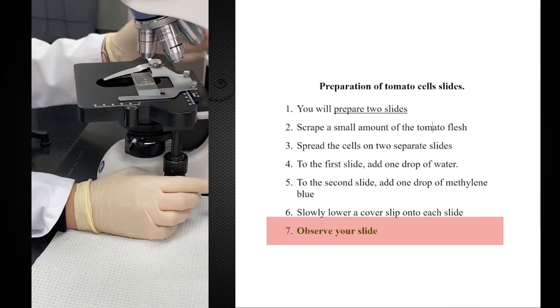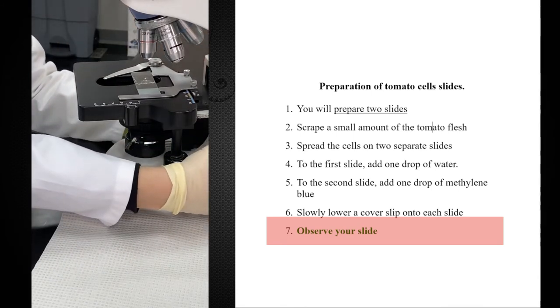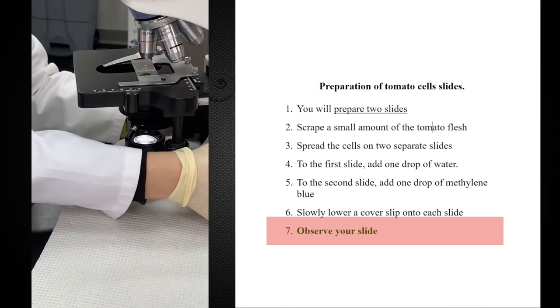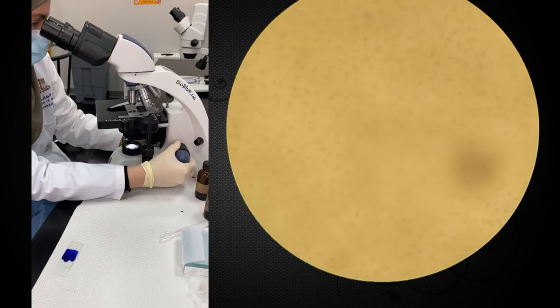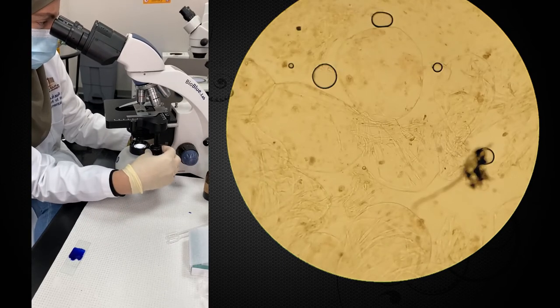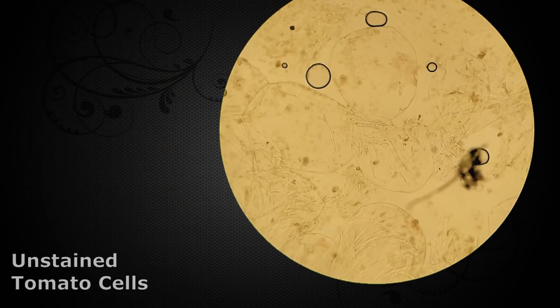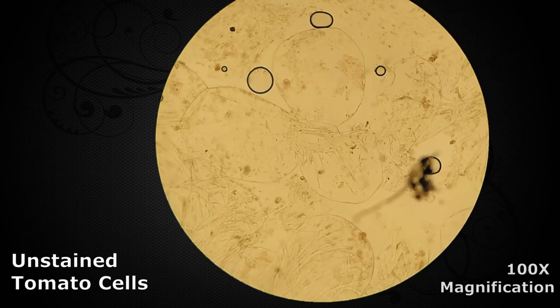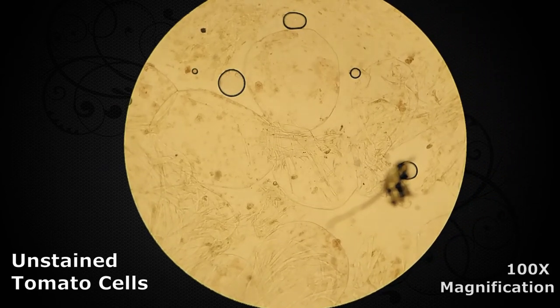I click the lowest magnification and with the coarse adjustment knob, I take the stage all the way up. I start looking and moving the stage slowly, slowly down until the image is clear. Tomato cells are big, large cells. Probably this magnification is enough, or I can move to the next magnification.